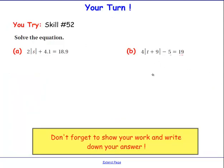Here are some problems for you to try on your own. Remember that your first step is going to be to isolate the absolute value — isolate means get it alone. If there is a 2 multiplied by it or a plus 4, you need to remove those so the absolute value is all by itself.